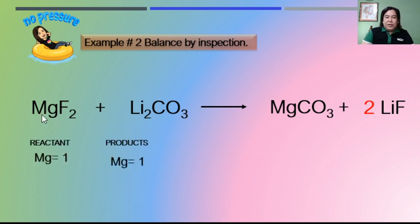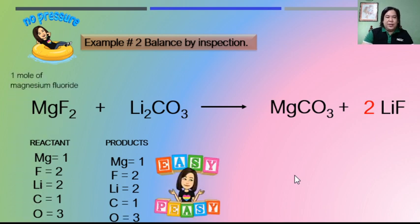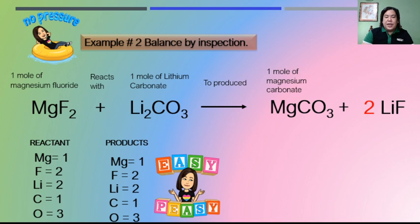Let us verify: magnesium is one on both sides; fluorine is two on the reactant side and two times one equals two on the product side; lithium is two on the reactant side and two on the product side; carbon is one on both sides; oxygen is three on the reactant side and three on the product side. This equation is already balanced. We read this as: one mole of magnesium fluoride reacts with one mole of lithium carbonate to produce one mole of magnesium carbonate and two moles of lithium fluoride. The coefficient is read as moles.